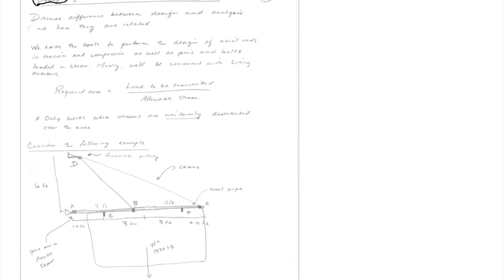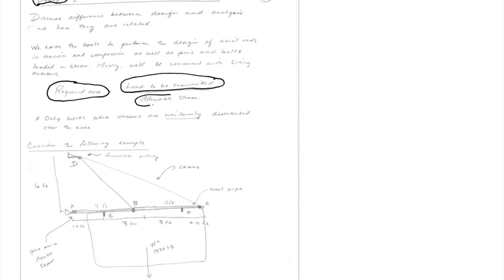We're going to discuss how that looks for a very simple setting where we just basically have tension — members in axial tension or compression, or bolts in shear. The basic design criteria we're going to discuss is sizing members. Given some load that comes from statics and some allowable stress that comes from the material, we can take the load and divide it by the allowable stress to figure out what the required area is to carry that load.